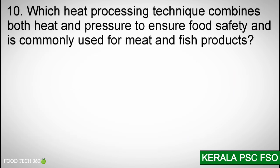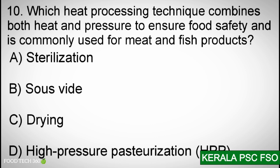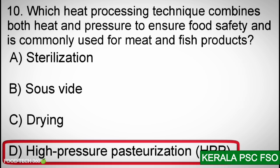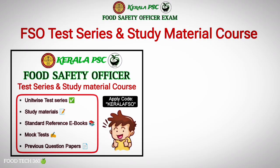Q10: Which heat processing technique combines both heat and pressure to ensure food safety and is commonly used for meat and fish products? Options: A) Sterilization, B) Sous vide, C) Drying, D) High pressure pasteurization. Correct answer: D — HPP, High pressure pasteurization.